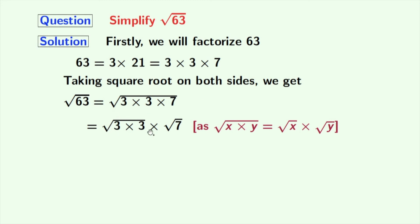From the first square root, we get 3 and the second square root, that is square root of 7, remains same. In the first square root, we have used square root of a times a is equal to a. Here, a is 3. So, finally, 3 root 7 comes out as our answer.